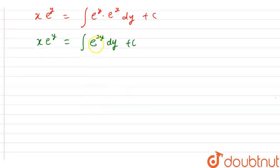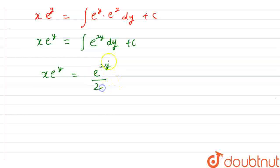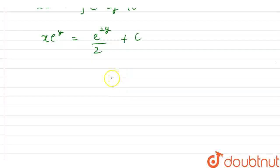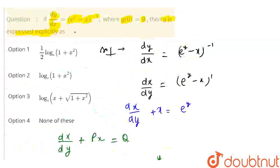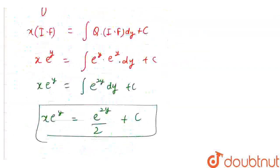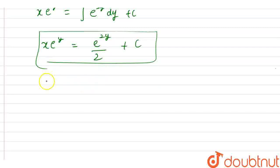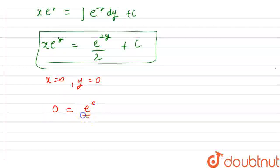We know the integration of e raised to the power of something. So e raised to the power of 2y integrates to e raised to the power of 2y over 2, because the coefficient of y is 2, plus c. Now applying the initial condition: y(0) equals 0 means when x equals 0, y also equals 0. Putting these values in: 0 times something equals e raised to the power of 0 over 2 plus c. So c equals minus 1 over 2.